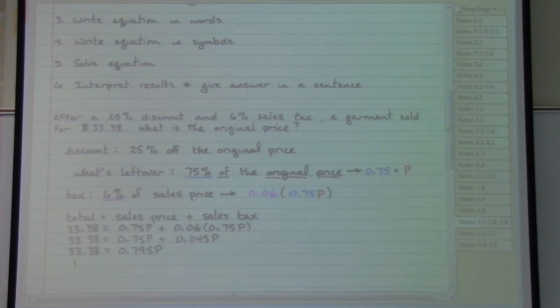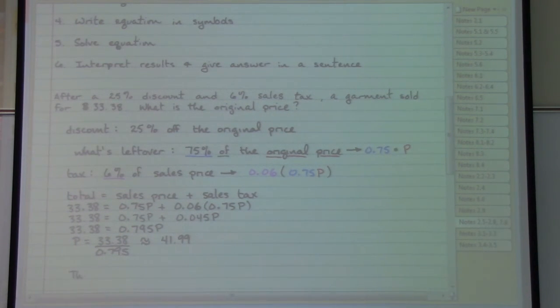And in order to get the p by itself, 33.38 divided by 0.795. And remember that p is the price. So if I actually plug that into my calculator, I'll need a rounded answer, which would mean 41.99. Telling me that the original price was $41.99.